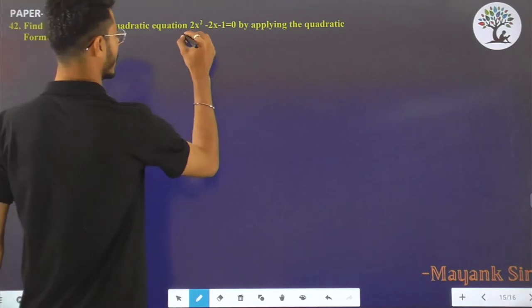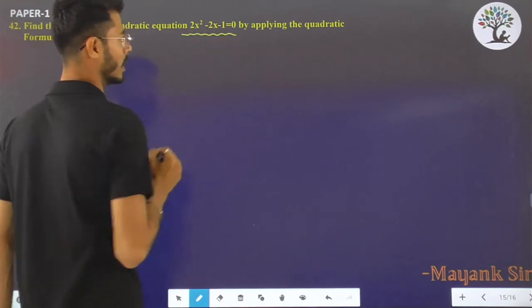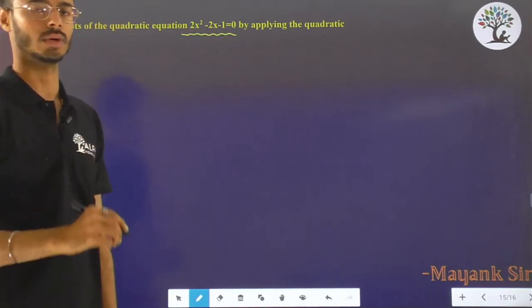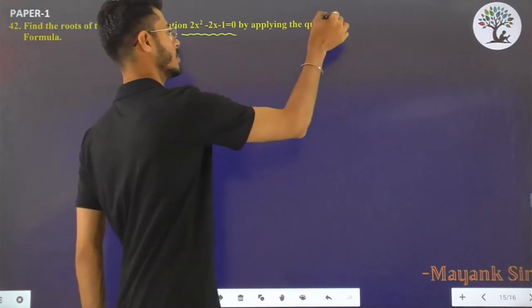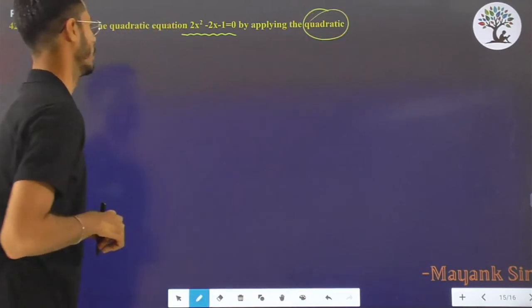Find the roots of this quadratic equation. Simple question: 2x² - 2x + 1 = 0, but we have to use the quadratic formula.